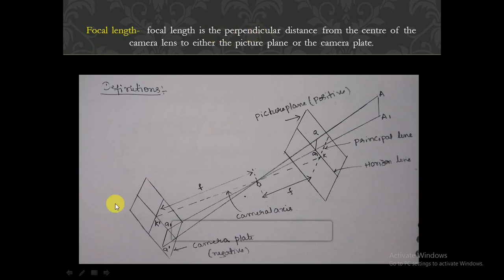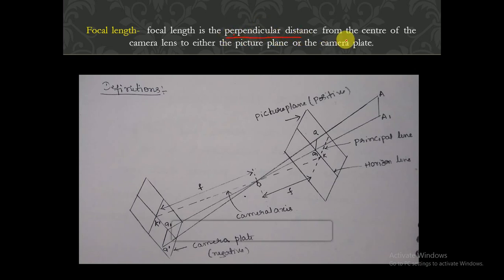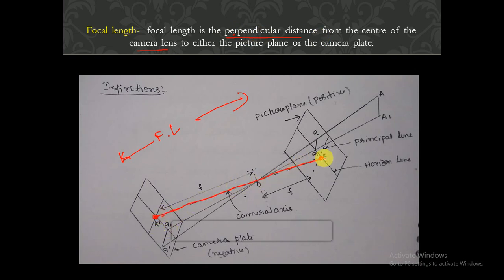Focal length: it is the perpendicular distance from the center of the camera lens to either the picture plane or the camera plate. You can see this perpendicular distance drawn here — from the center of the camera lens up to the picture plane. This length is called focal length.